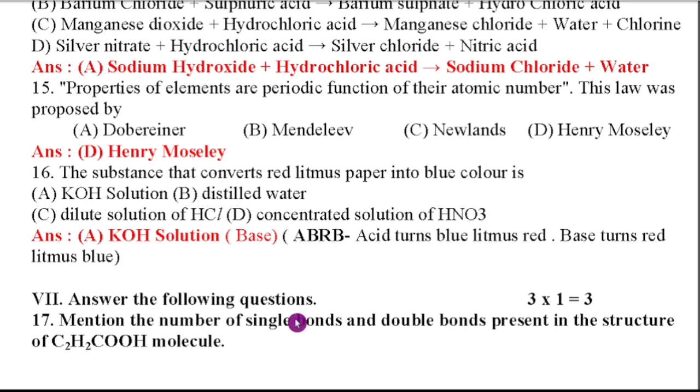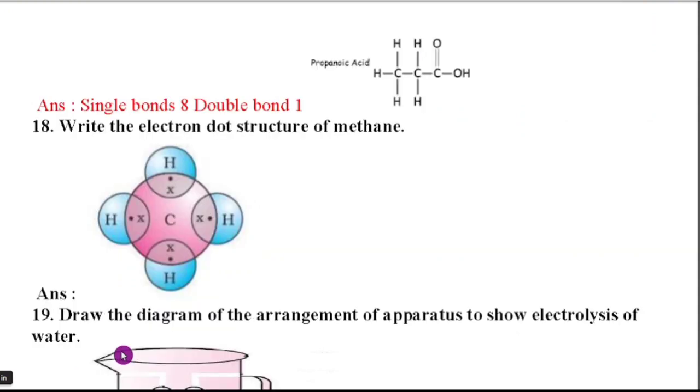Part 5 main, answer the following questions 3 into 1. So 3 marks. Seventeenth question, mention the number of single bonds and double bonds present in the structure of C2H2COOH molecule. So here, I have given the structure. So by seeing this structure easily, you are going to identify how many single bonds and how many double bonds.